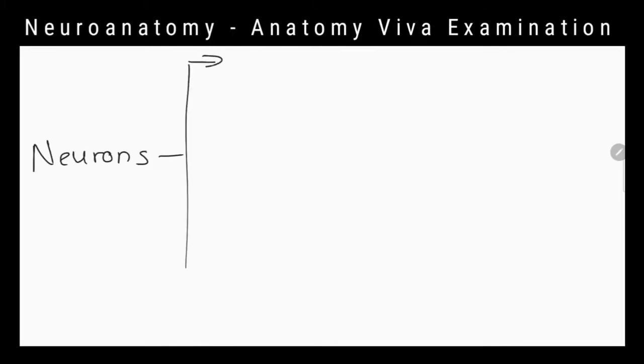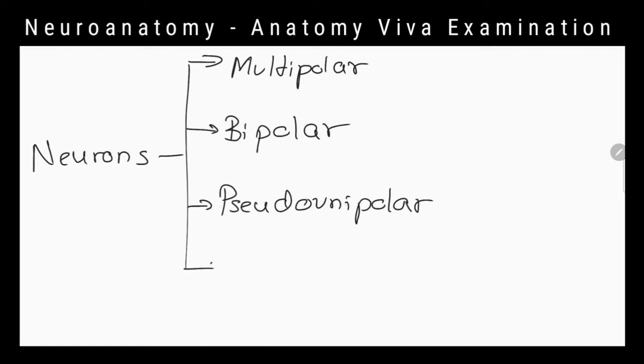How can you anatomically classify neurons? As multipolar, bipolar, pseudo-unipolar and unipolar.